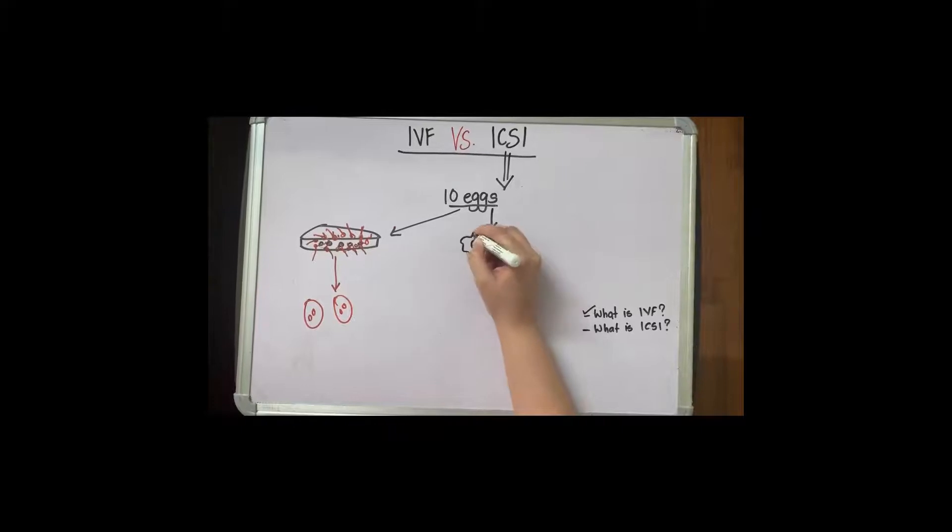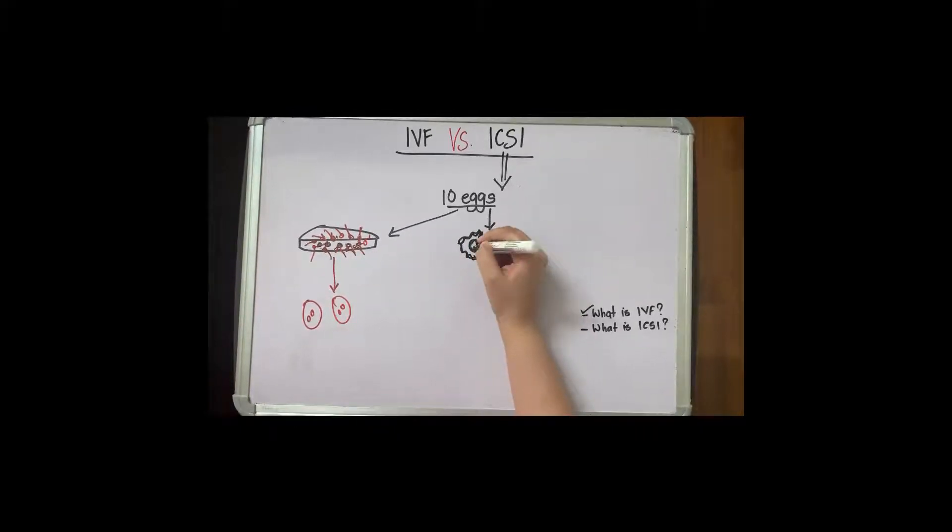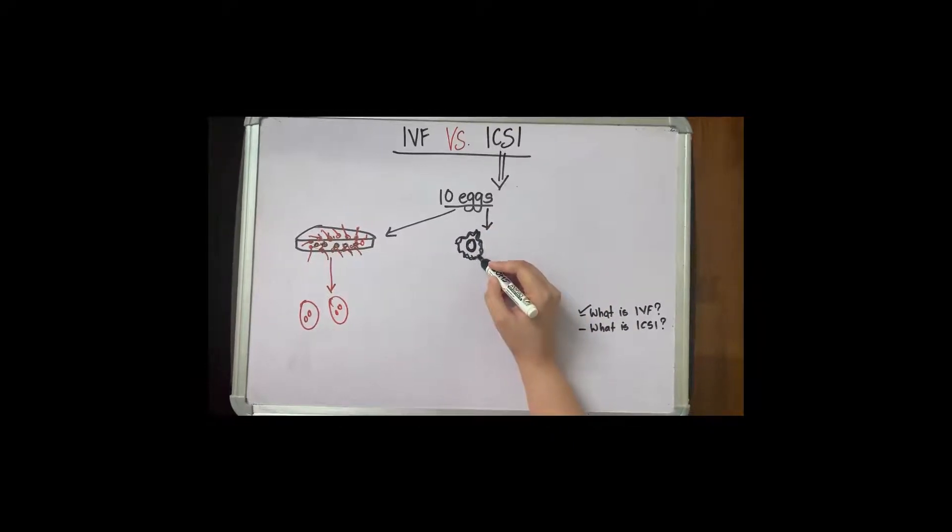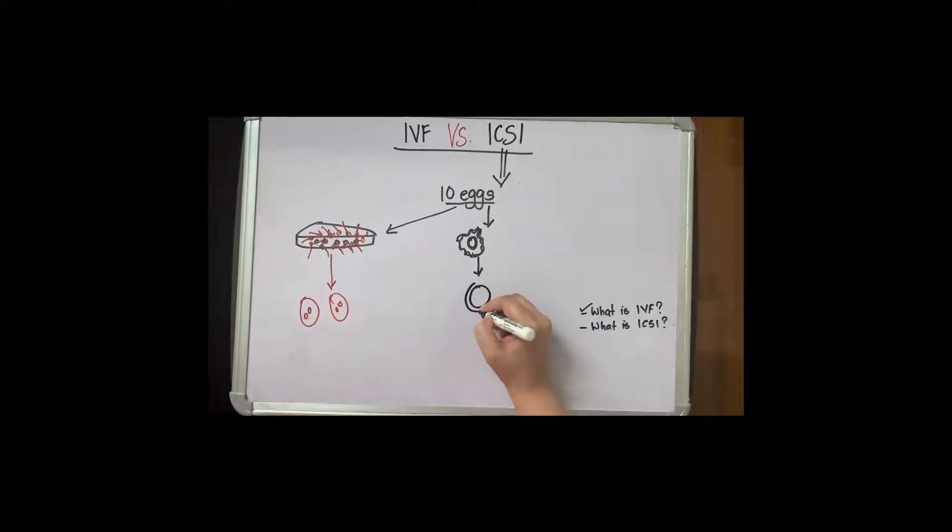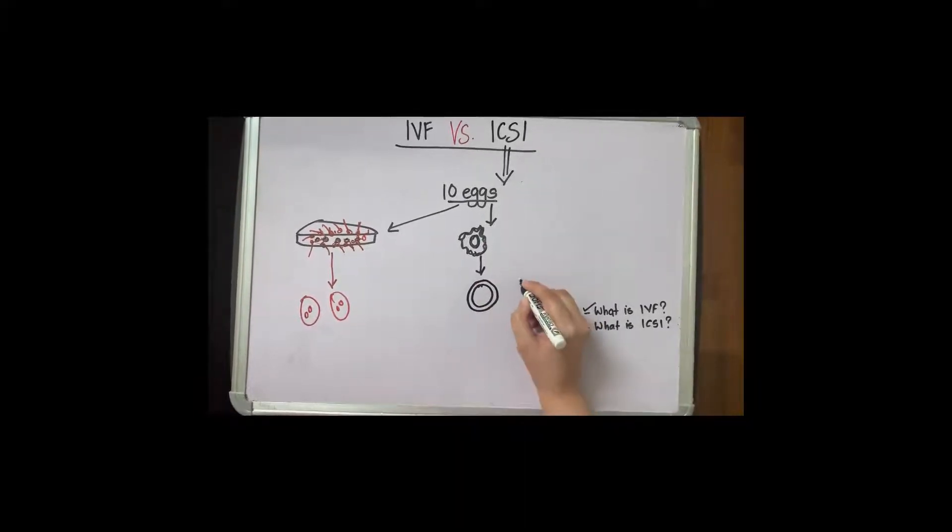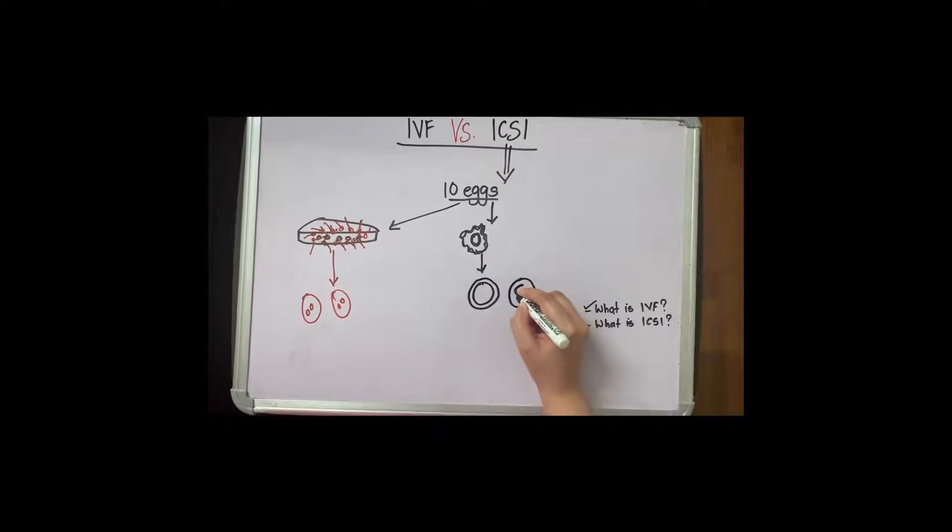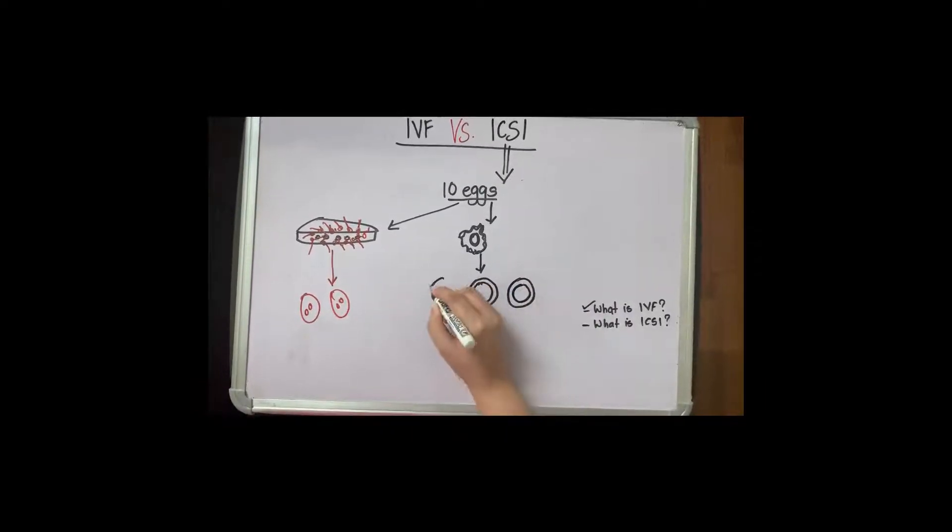In ICSI, all these eggs have a protective layer of cells known as corona. This is the egg. We strip the eggs from the corona. Then what we see is something like this. I'm just going to draw all the three variants that we end up seeing.